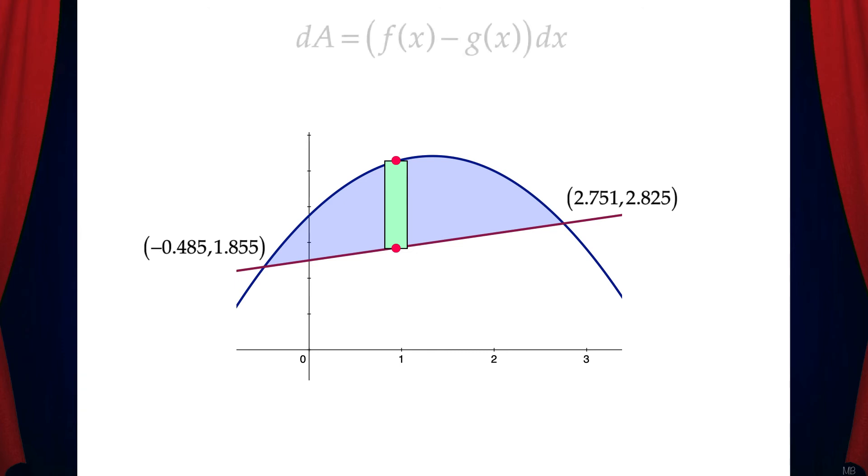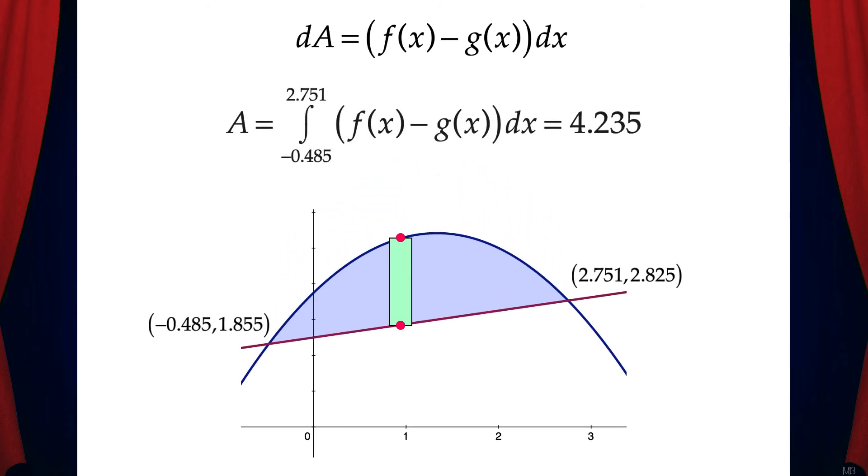And that means dA, the area of one rectangle, is f(x) minus g(x) dx. And that means the area between the curves is the integral from -0.485 to 2.751 of f(x) minus g(x) dx. Then we can use a calculator to solve and we get 4.235.